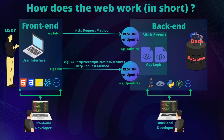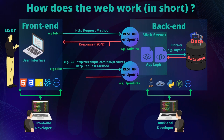If everything is valid, the back end interacts with the database to either create, read, update, or delete data. The database communicates with the web server using a library specific to that database. Once the query is executed, the database returns the data to the web server, which then sends it back to the front end in the form of a JSON object.